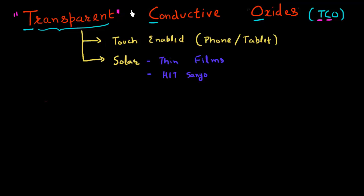That is, transparent and conductive are usually not associated with the same noun. So these two adjectives, essentially transparent and conductive, usually don't go hand in hand. And let me explain why.